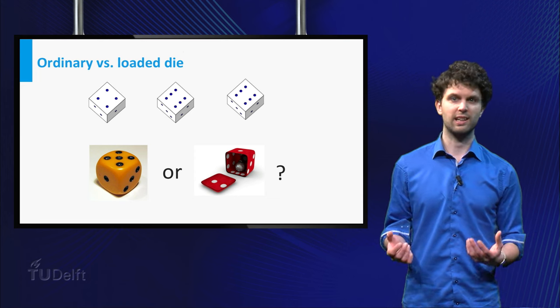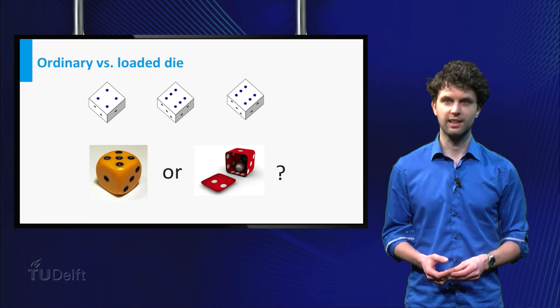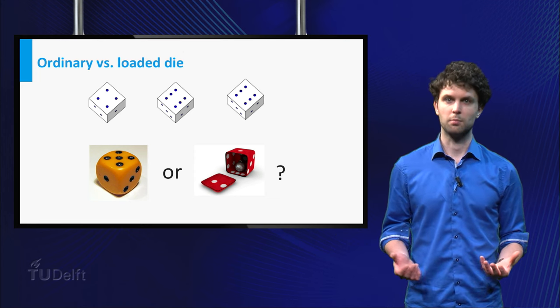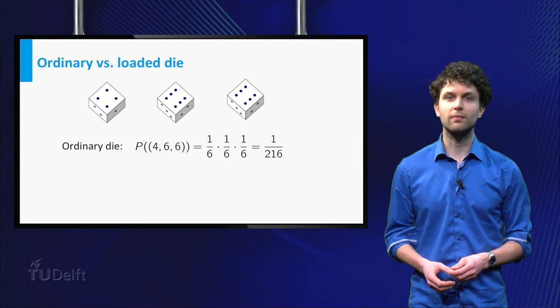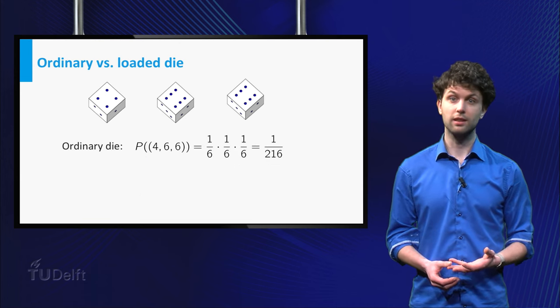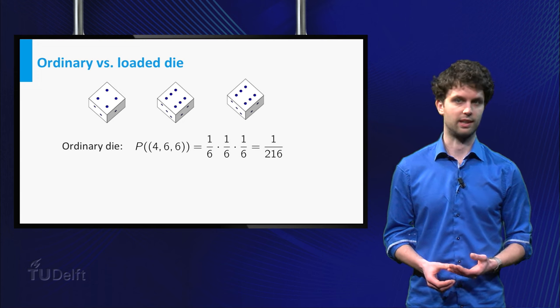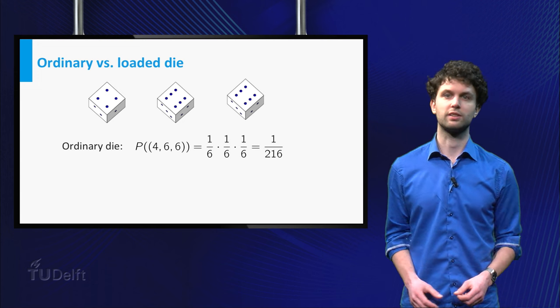Intuitively, it may seem more likely that I use the loaded one, since there are two sixes. But let's do some calculations to find out. If you throw with the ordinary die, the probability of throwing four and two sixes is just 1 over 6 to the power 3.